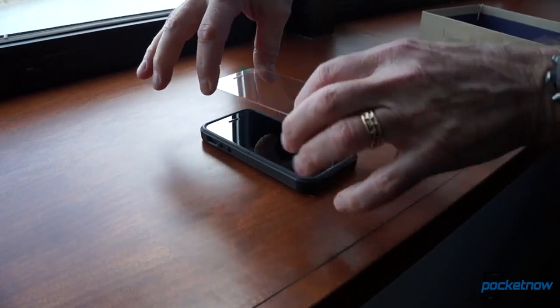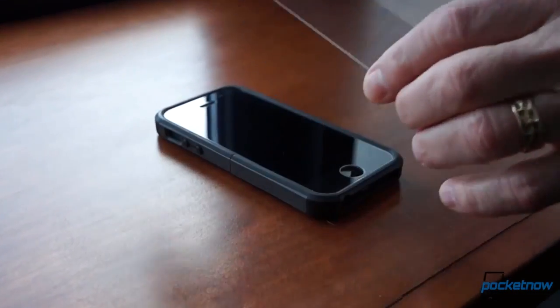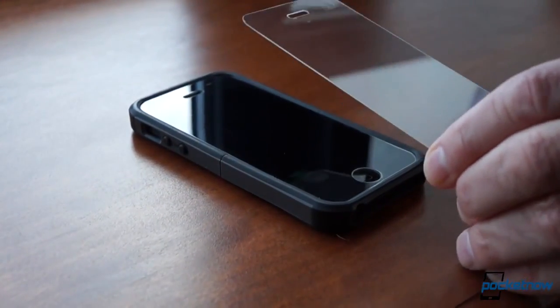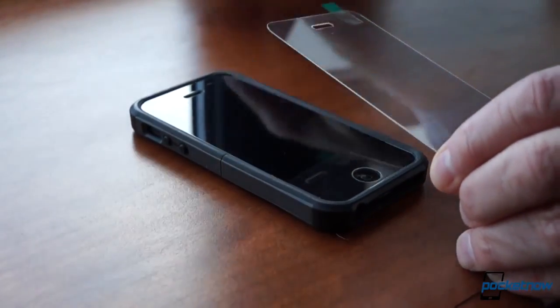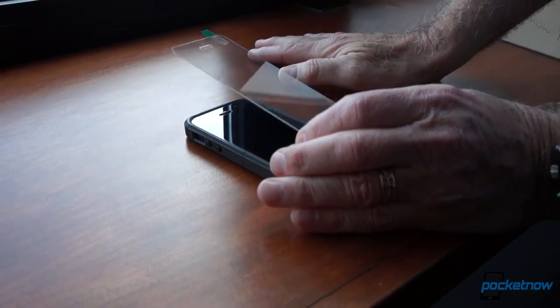Jeff told me that accessory applications like that are already in the works from other companies, but GT Advanced is also hoping to coordinate with OEMs to include sapphire screens on smartphones right out of the box.